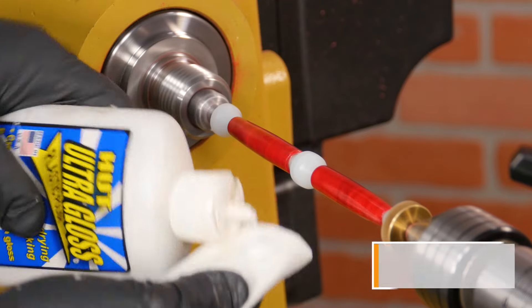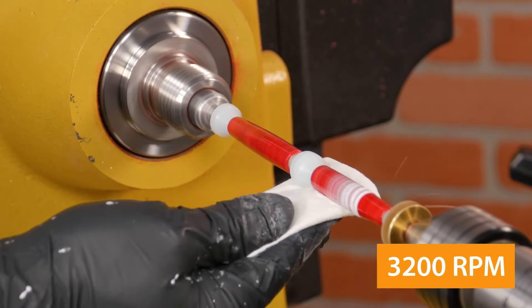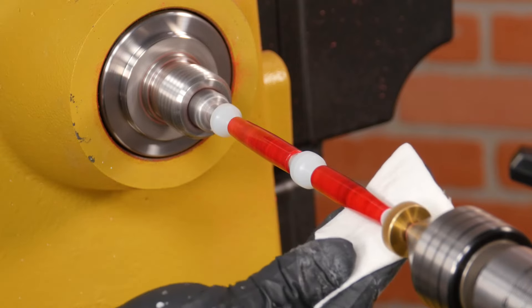Once you've sanded through 12,000 grit, add a small amount of plastic polish to a soft cloth and gently apply it to the blanks for a beautiful shine.